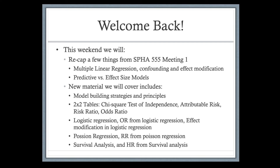We're also going to recap two-by-two tables — material from prerequisite courses — reminding ourselves of the chi-squared test of independence, attributable risk, risk ratios, and odds ratios. Then we'll move into logistic regression and see how it allows us to estimate odds ratios, including odds ratios adjusted for other variables, taking confounders into account.